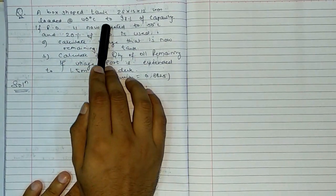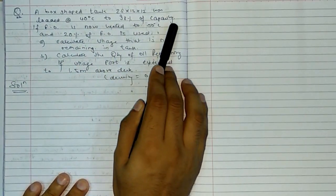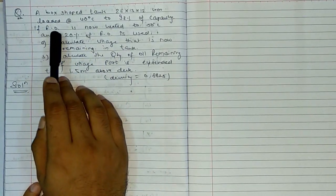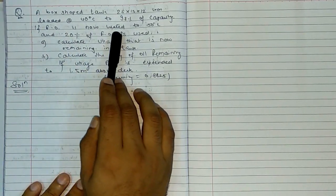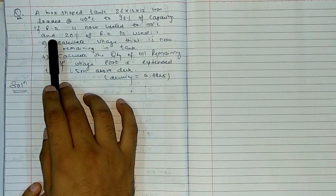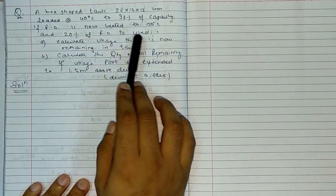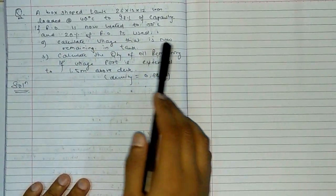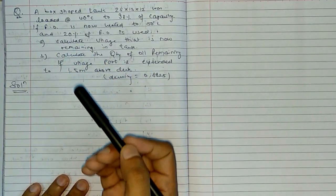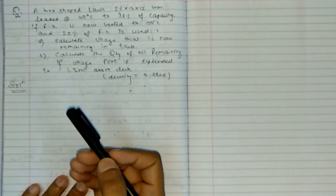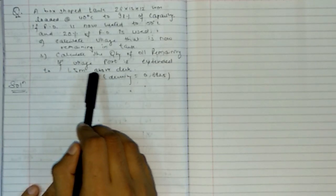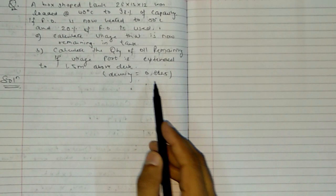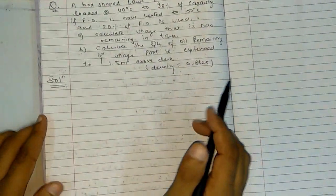The FO was loaded at 40 degrees Celsius to 98% of capacity. The FO is now heated to 50 degrees Celsius and 20% of FO is used. Calculate the quantity of oil remaining in the tank. A ledge port is extended up to 1.5 meters above deck. Density given is 0.8825.